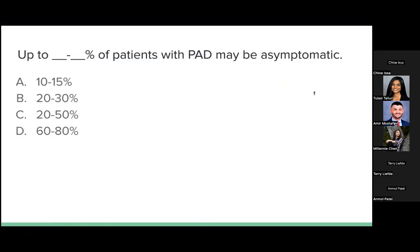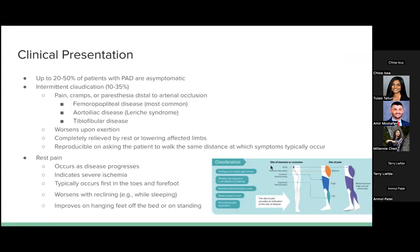Up to 20 to 50% of patients with PAD are actually asymptomatic. And 10 to 35% of patients present with intermittent claudication, which manifests as pain, cramps, or paresthesia distal to the arterial occlusion. There are different subtypes: femoropopliteal disease is the most common and usually manifests as calf claudication. Aortoiliac disease presents with the triad of bilateral buttock, hip, or thigh claudication, erectile dysfunction, and absent or diminished femoral pulses. Tibiofibular disease typically causes foot claudication.